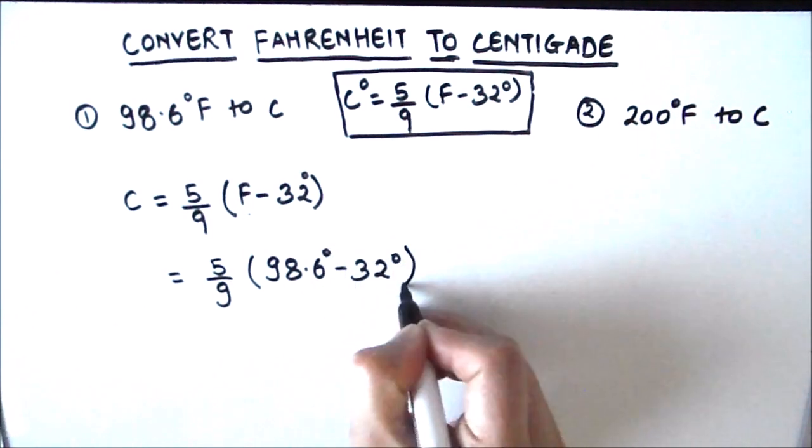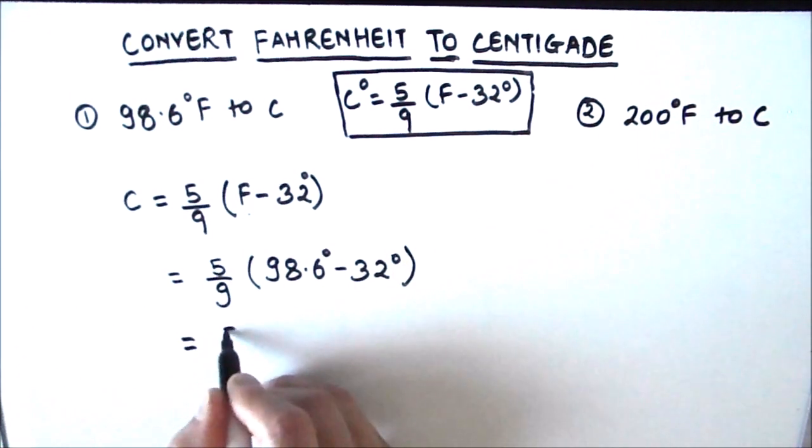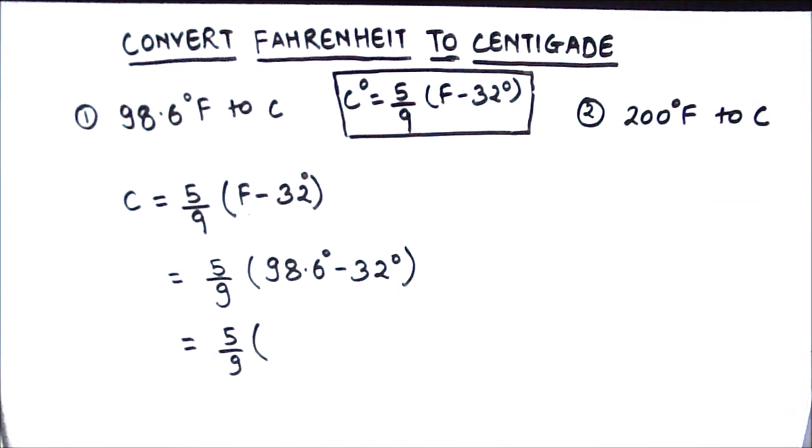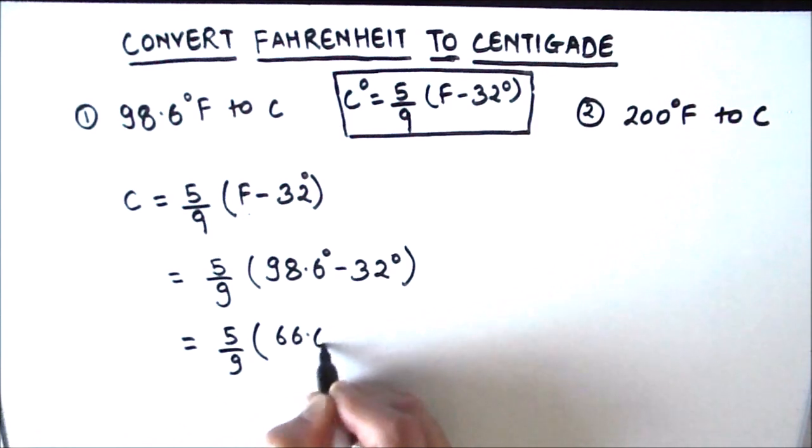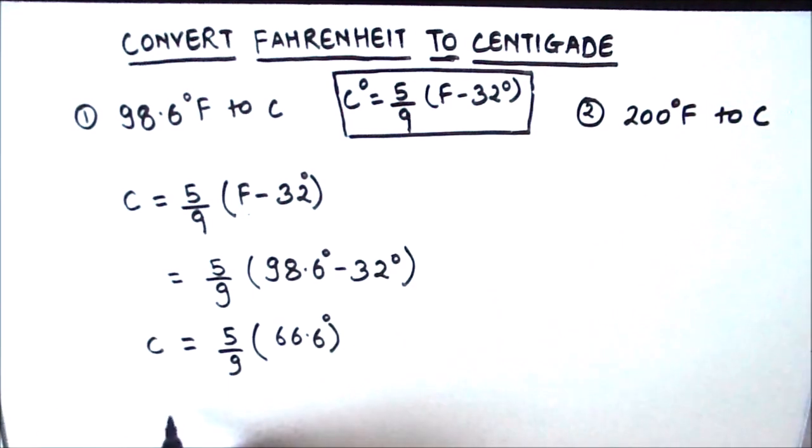Both are in degrees. That's going to be 5 upon 9. 98.6 minus 32 is 66.6. After solving this, we are going to get C is equal to 37 degrees. That means 98.6 degree Fahrenheit is equal to 37 degrees centigrade.